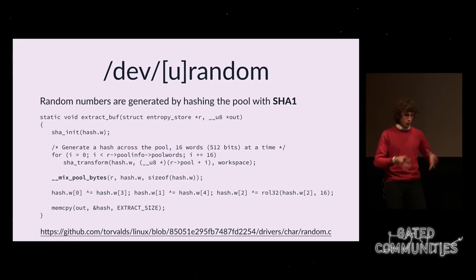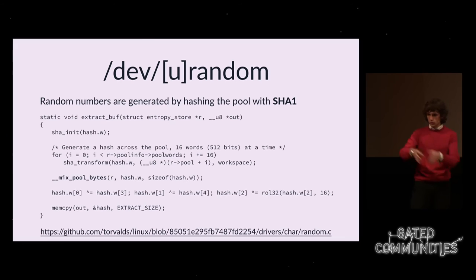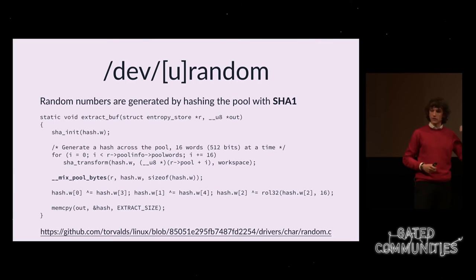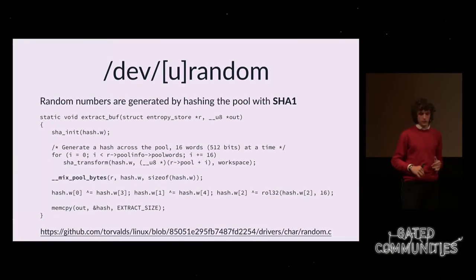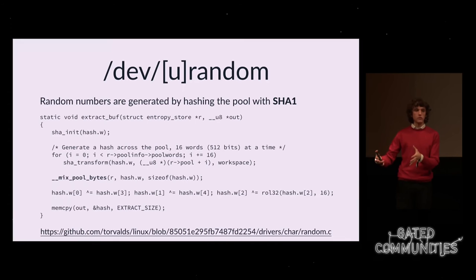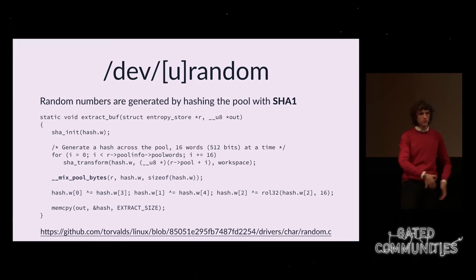Extraction — actual random bytes generation — happens with SHA-1. When you want some random bytes from the kernel, it runs SHA-1 on the pool, gives you the output, and also feeds that output back into the pool using the mixing function. This is a bit different from our design which used a counter — keeping counters turns out is hard, they can reset, you can lose count, and that's bad. This approach also has better security properties against compromise: when it generates output, it stirs it back in, and if you need more output, SHA-1 runs again on the new pool.